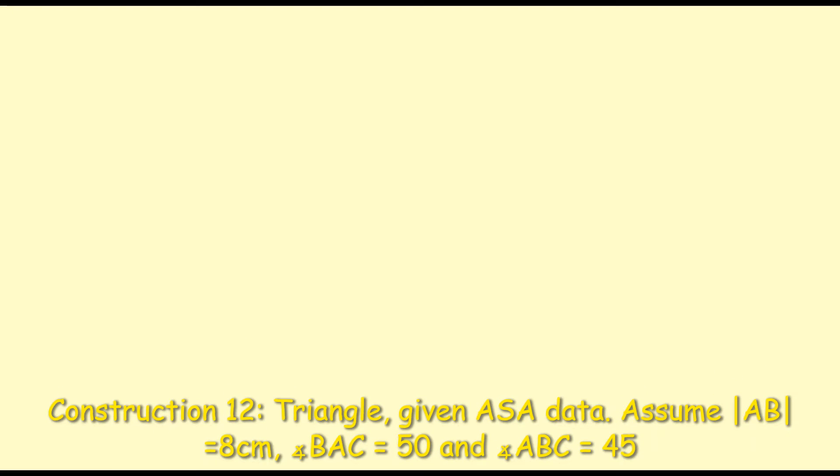In this video we're looking at construction 12 which is asking us to construct a triangle ABC where we're given the sizes of two of the angles and one side. In this particular question we're going to look at a triangle with a side of 8 cm and angles 50 degrees and 45 degrees.